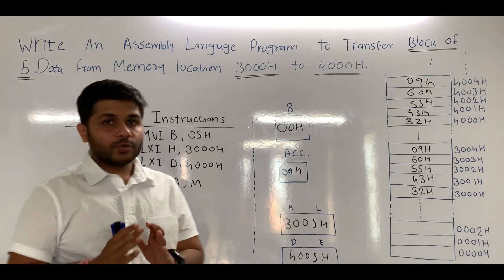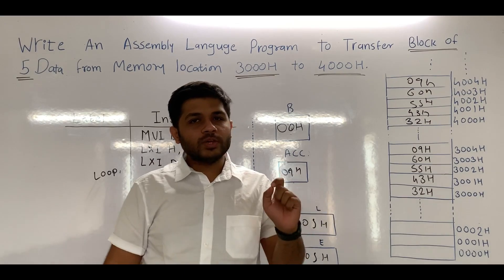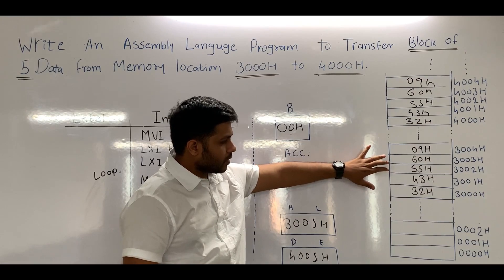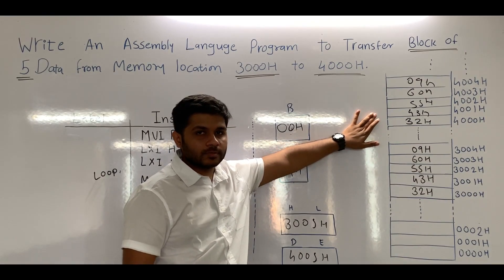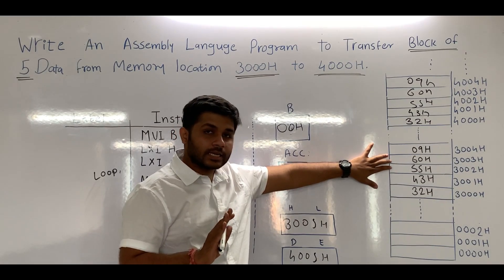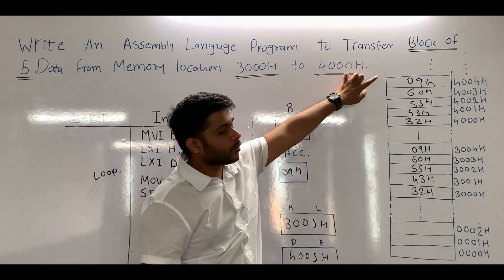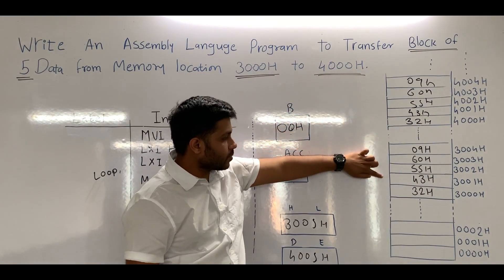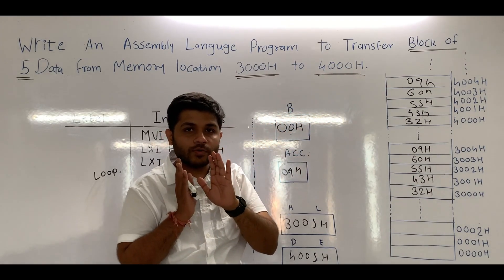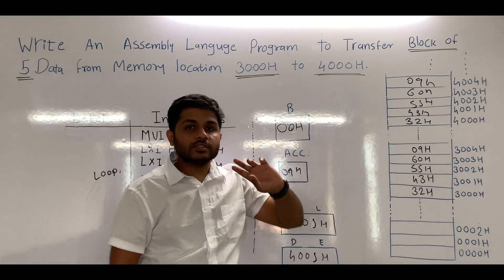Now if you have understood this program, you have to perform the same program with minor changes. You have to transfer a block of data from 3000H to 4000H and the size of the block is again 5, but you have to transfer the block of data in reverse order. It means the data from 3000H should be stored to 4004, and data from 3001 should be stored to 4003.